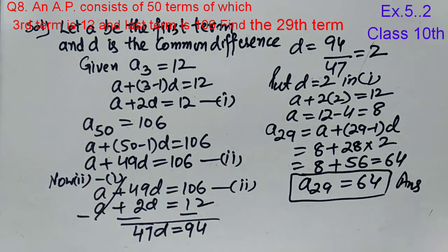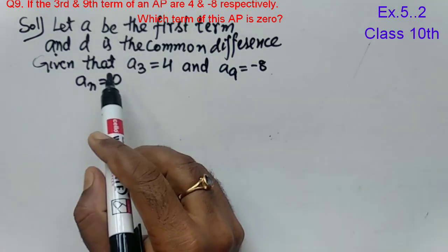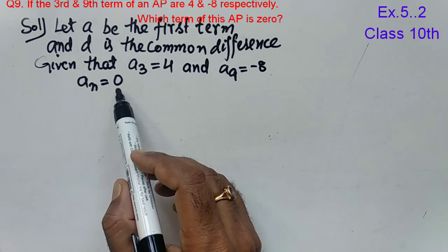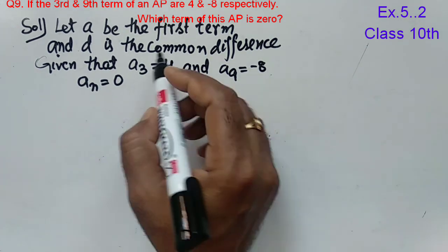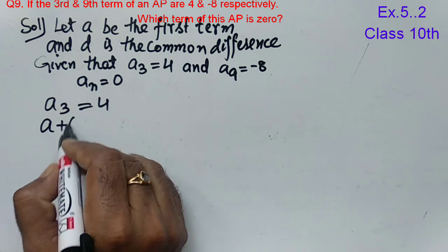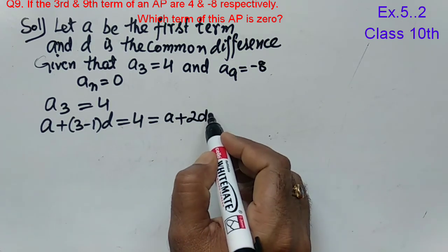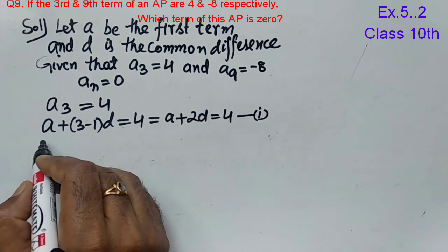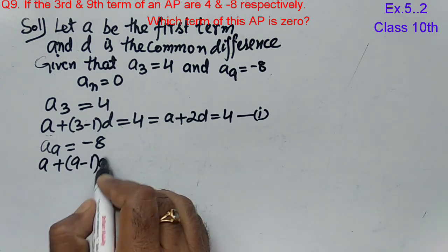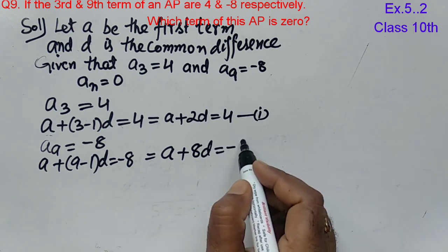Let A be the first term and D is the common difference. The third term is 4 and the ninth term is minus 8. We have to find which term of the given AP is 0, meaning AN equals 0. Starting with A3 equals 4, it can be written as A plus (3 minus 1) into D equals 4, giving A plus 2D equals 4 — this is equation one. Now A9 equals minus 8, so A plus (9 minus 1) into D equals minus 8, giving A plus 8D equals minus 8. This is equation two.